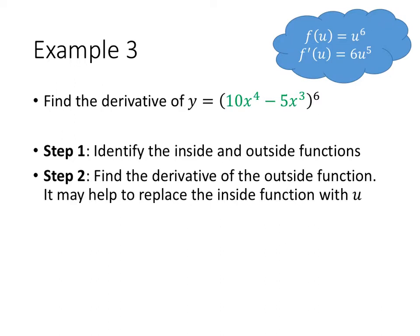For the outside function, it's sometimes useful to rewrite it using a different variable. In this case, I've chosen the letter u, but you can really use whatever letter you want. The reason here is that it can be confusing when we have x's in multiple places. So rather than thinking of the outside function as being x⁶, I'm just going to think of it as u⁶.